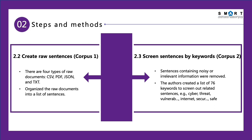After the raw documents are collected, we create the raw sentences and put them into a list of sentences from all of the documents. Then from the sentences, we screen the high-quality sentences by keywords. We created a list of 76 keywords to screen out related sentences. The keywords include cyber, threat, vulnerable, internet, security, and safe.